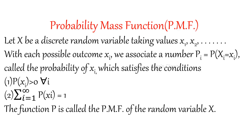Now, probability mass function. This is defined only for discrete random variables. If x is a discrete random variable that can take values x1, x2, etc., and if you assign probabilities pi to each xi satisfying two conditions — probability of xi greater than 0, and the total probability when you add up all values equals 1 — then the function p is called the probability mass function of the random variable x.